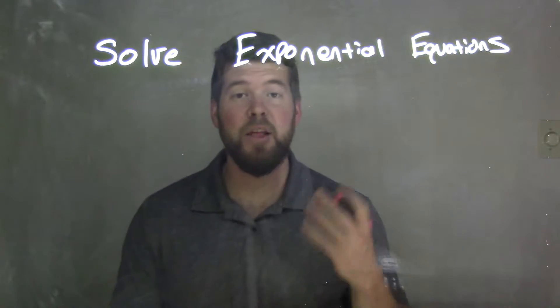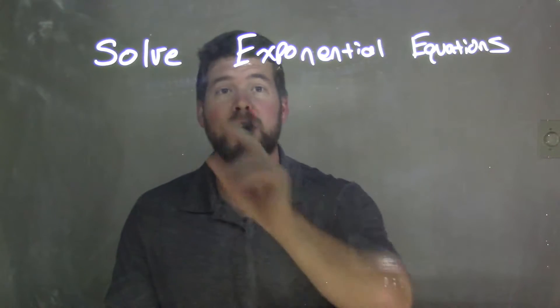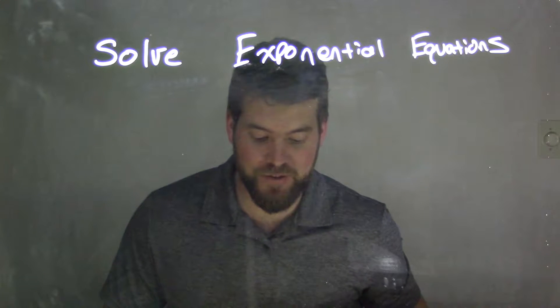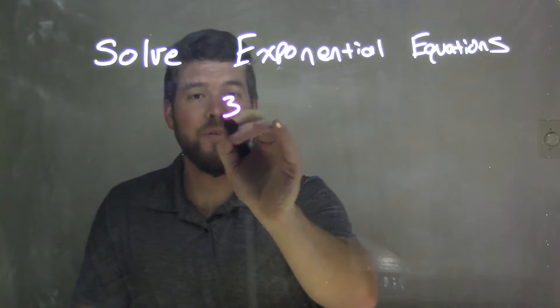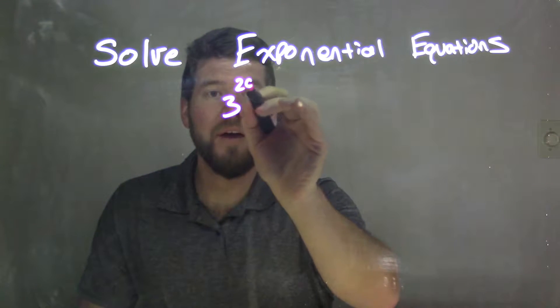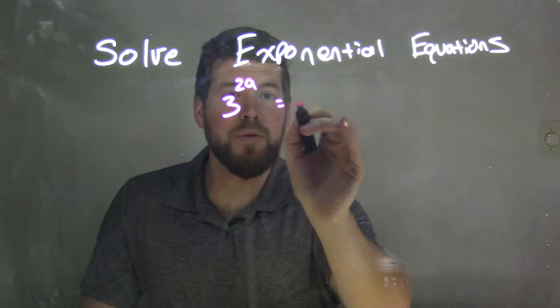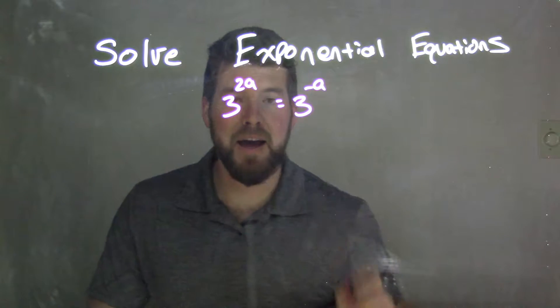Hi I'm Sean Gannon and this is MinuteMath and today we're going to solve exponential equations. Our equation here is 3 to the 2a power equals 3 to the negative a.